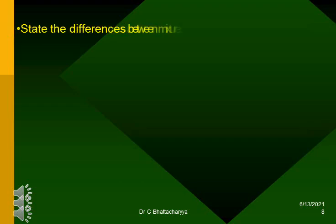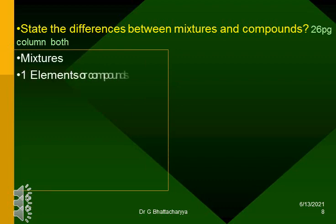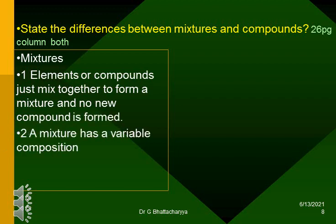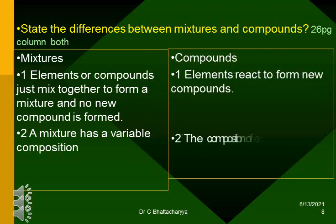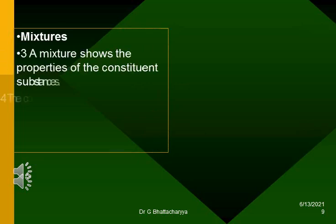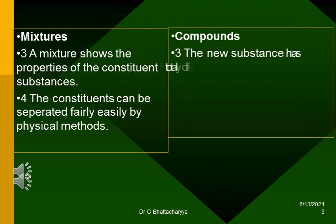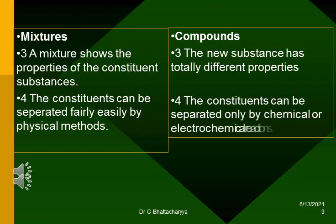State the differences between mixtures and compounds. Mixtures: (1) Elements or compounds just mix together to form a mixture and no new compound is formed. (2) A mixture has a variable composition. (3) A mixture shows the properties of the constituent substances. (4) The constituents can be separated fairly easily by physical methods. Compounds: (1) Elements react to form new compounds. (2) The composition of each new substance is always fixed. (3) The new substance has totally different properties. (4) The constituents can be separated only by chemical or electrochemical reactions.